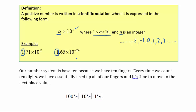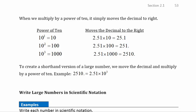Our number system is base 10 because we have 10 fingers. Every time we count 10 digits we move to the next place value. We have the ones place — counting zero through nine — and once we pass nine we jump to the tens place, and so on. That makes our number system base 10.